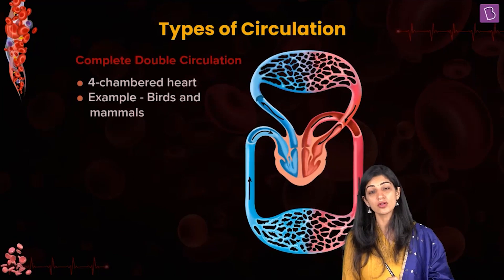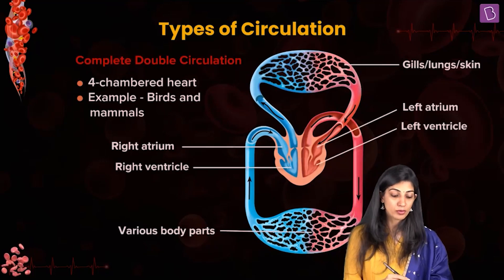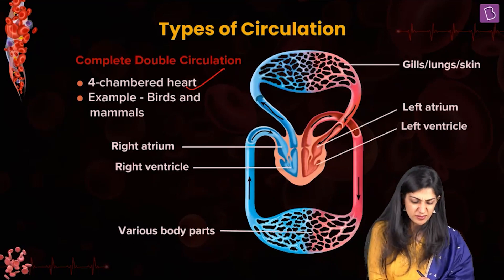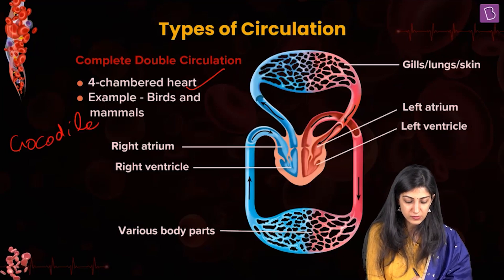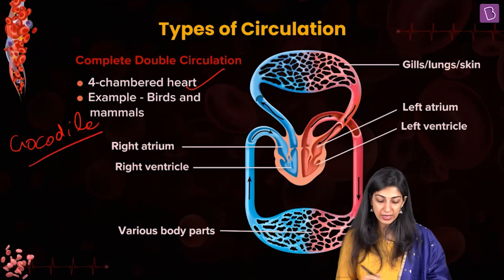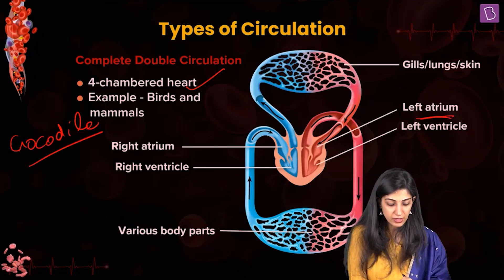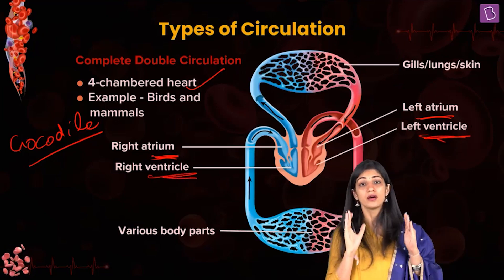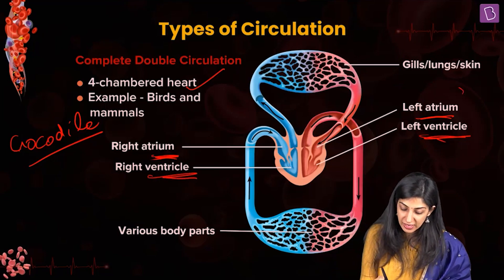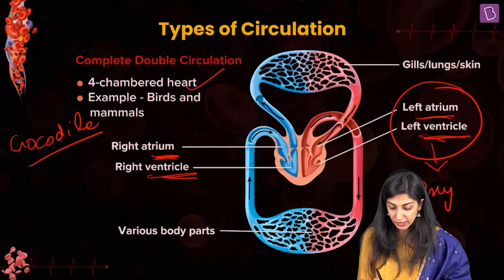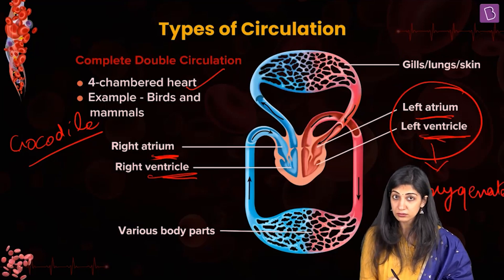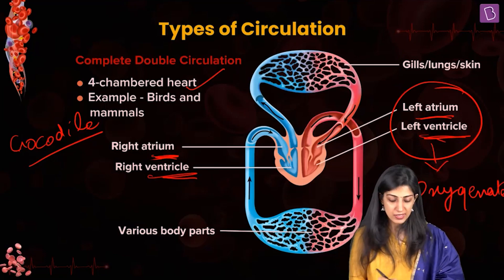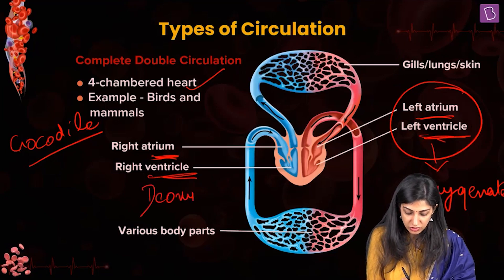Then there is double circulation, seen in four-chambered hearts — crocodiles, birds, and mammals. You have the left atrium, right atrium, left ventricle, and right ventricle. The left side of the heart deals with oxygenated blood, and the right side deals with deoxygenated blood.